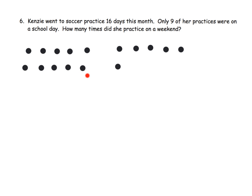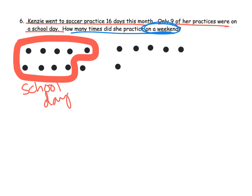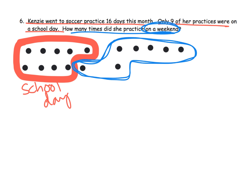So we've drawn our problem. Now it says only nine of her practices were on a school day, so I can circle nine here — there are the nine that were on a school day. She went to practice 16 days this month, so whatever is left must be the weekends. We'll assume that's what the authors mean, so this group is our weekend. Counting the remaining dots: six plus one more is seven. So our answer for weekend is seven.